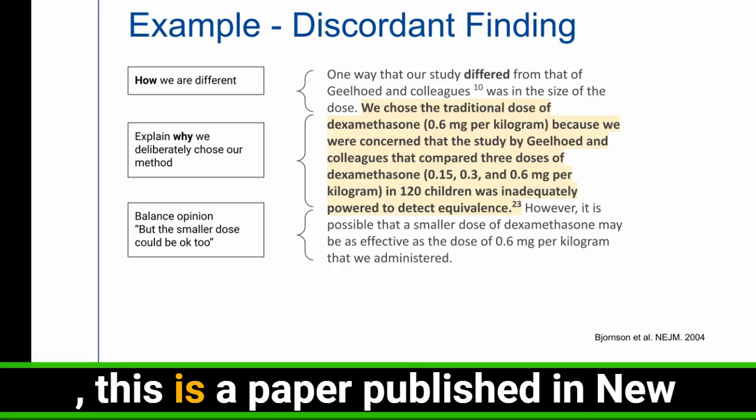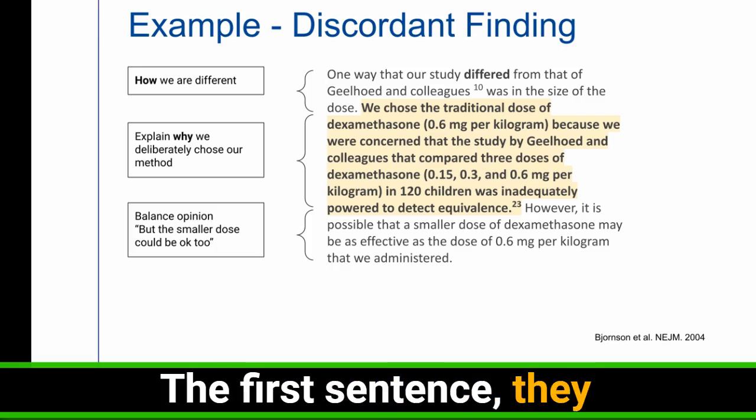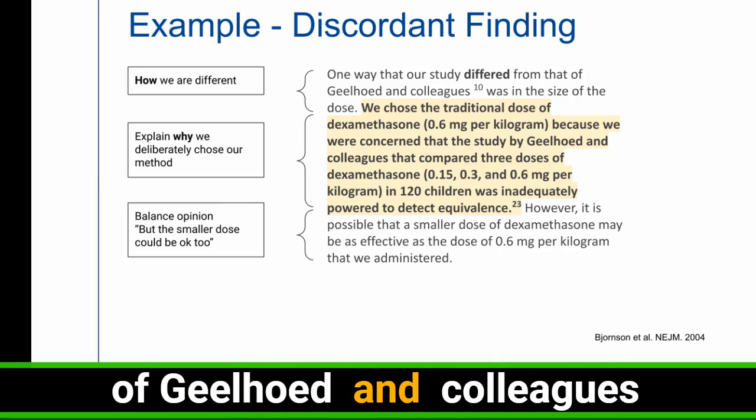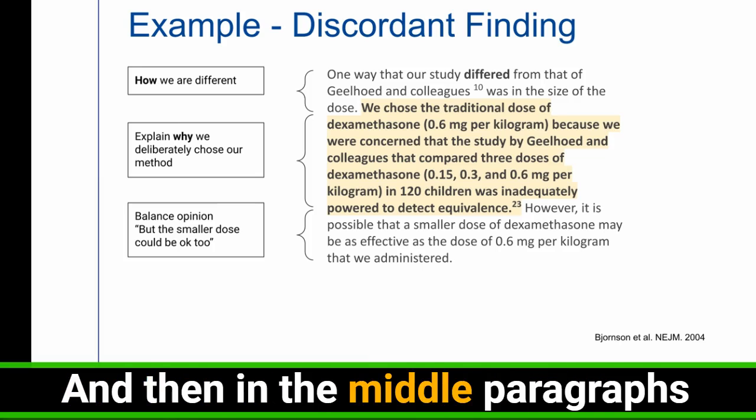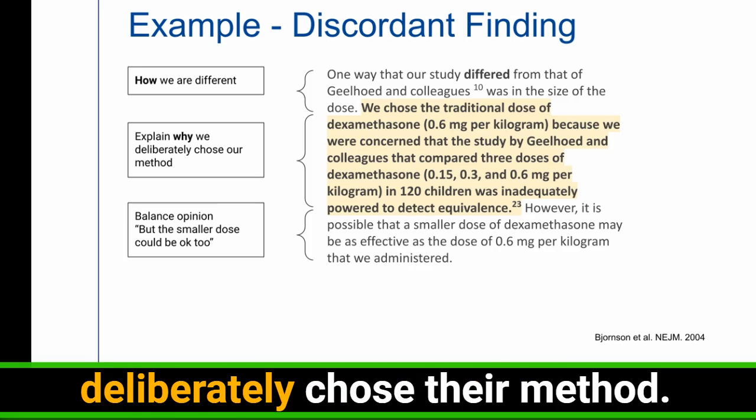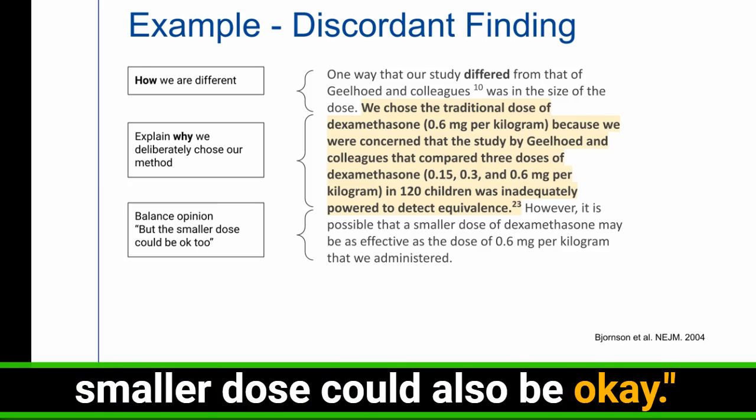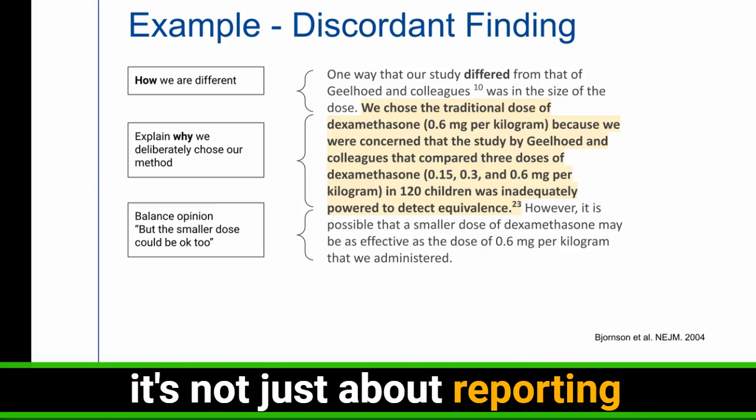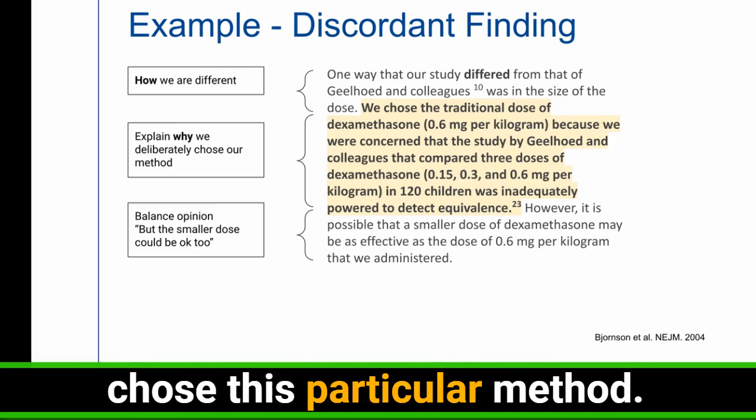So let me show you another example here. This is a paper published in New England Journal of Medicine. Here, the first sentence, they immediately say, one way that our study differed from that of Goel and colleagues was the size of the dose. They are saying how they are different from other studies. And then in the middle paragraphs here, they explain why they deliberately chose their method. Then finally, they added a little bit of balance of opinion, but the smaller dose could also be okay. So here, again, importantly, it's not just about reporting studies that are different from them, but explaining how they're different and why they chose this particular method.